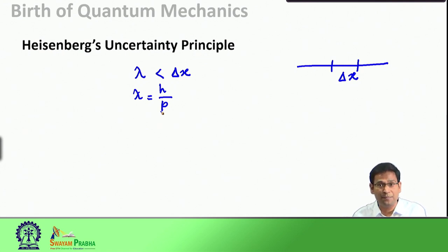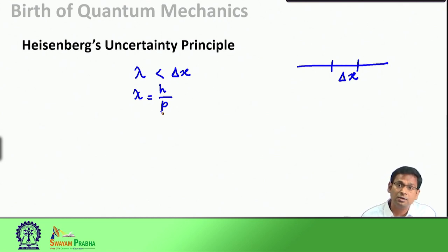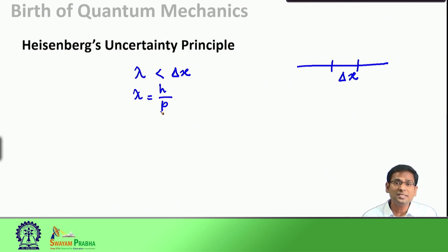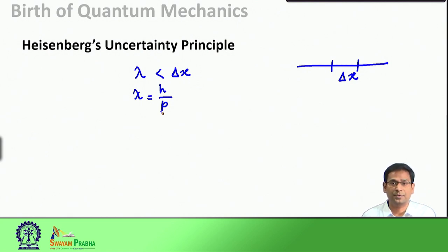The very act of measurement - shining light on the electron - influences the momentum of the electron, because the collision of light and electron leads to transfer of momentum from light to electron, and therefore the electron's momentum will change. So if I want to measure the position of the electron precisely, I have to give up my hope of determining the momentum of the electron precisely, because the very act of measuring position compromises the momentum measurement.